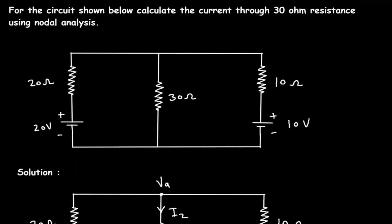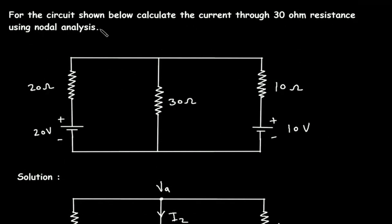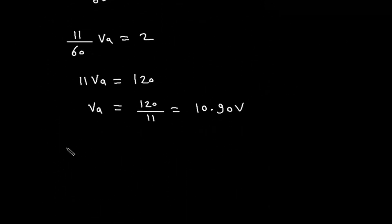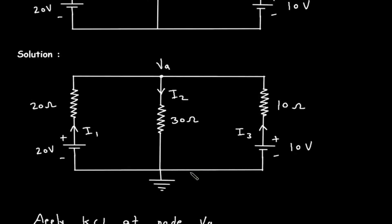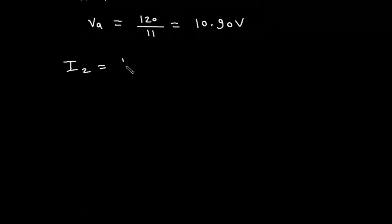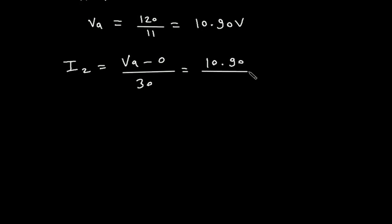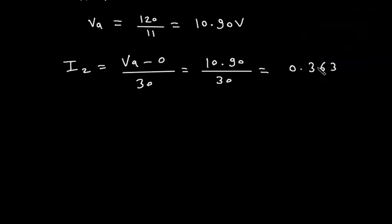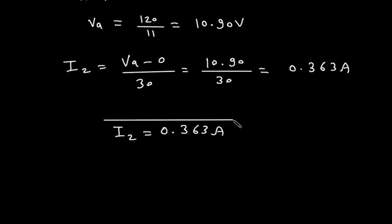We have to calculate the current through the 30 ohm resistance, which is I2. I2 is equal to VA minus 0 divided by 30, so I2 equals 10.90 divided by 30, which equals 0.363 ampere. Therefore I2 is equal to 0.363 ampere.